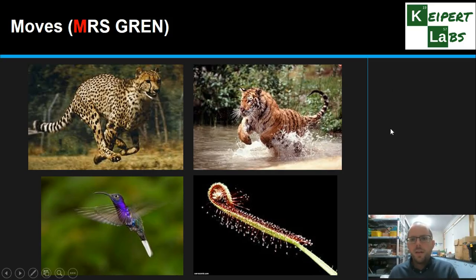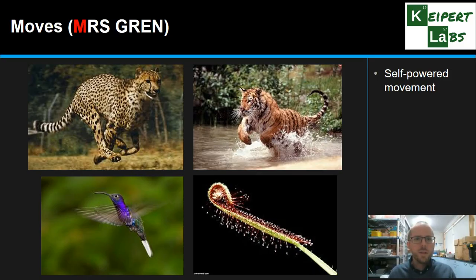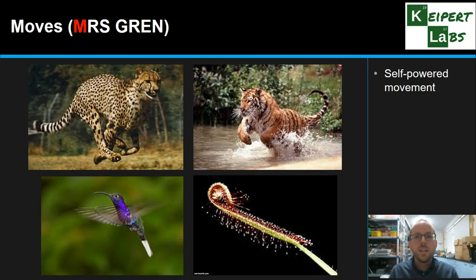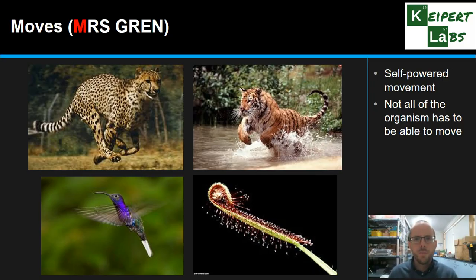Moves. We're thinking about this ability of what we call self-powered movement — that the living thing is able to move in some way of its own accord, rather than purely just being blown by the wind or carried by gravity. That movement doesn't necessarily have to be quick. Looking at some of the images chosen here, three of them do make very quick movements, but plants move on a much slower time scale. We use time-lapse photography to see plant components move over time. Also, not all of the organism has to move — a tree is rooted to the ground, but certain parts of it might move over time. So: self-powered movement.